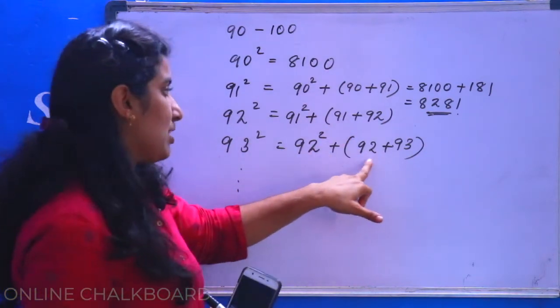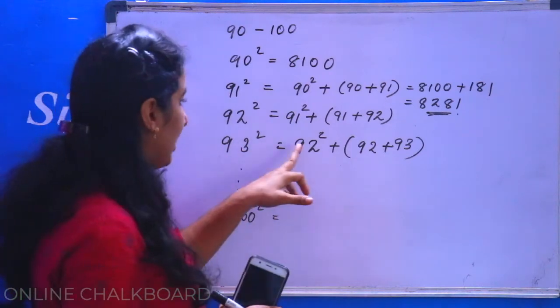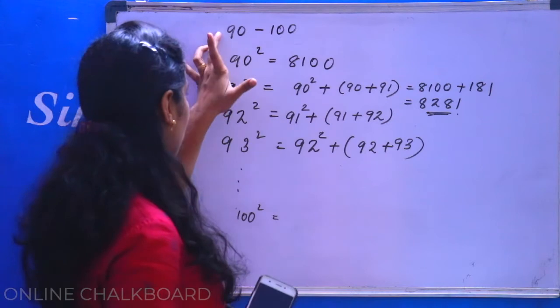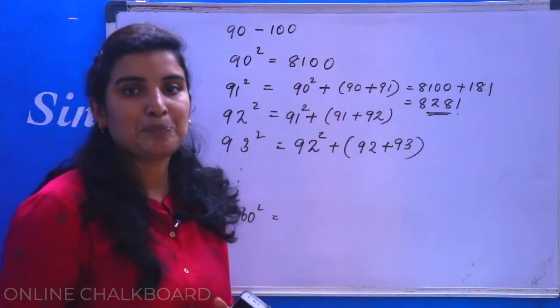Now we have 92 square. Let's call the 92 square. This will be 92 plus 93.